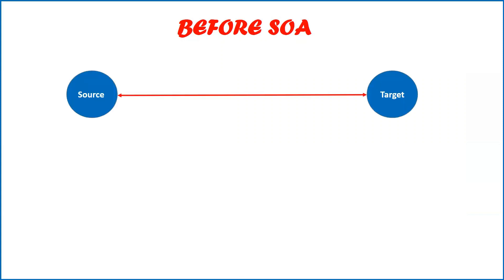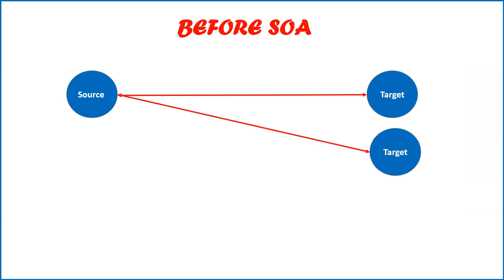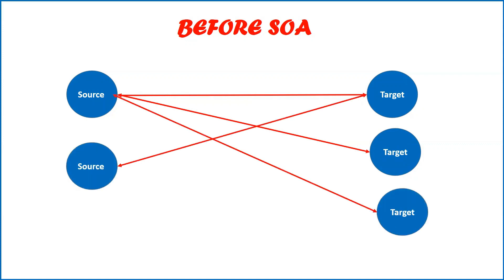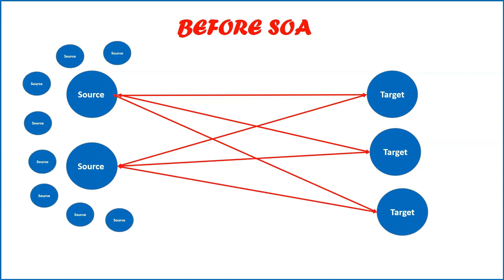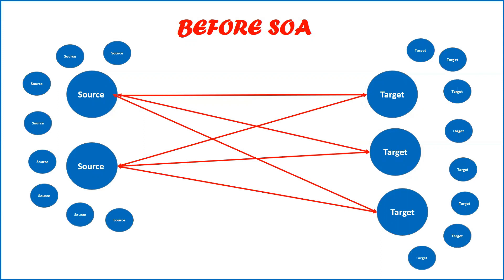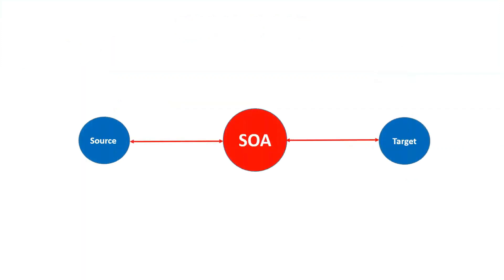Before SOA, they would be integrated by a one-to-one relationship — you make a code change in your source application and a code change in your target application so they can exchange data. If a new target is added tomorrow, you change the source code again and modify the new target. As you get more sources and targets in the future, it is not feasible to update your code every time to integrate each source and target combination.